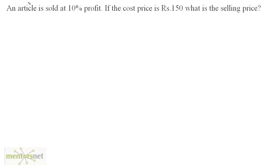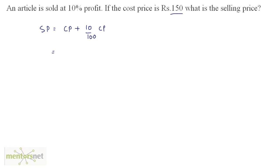Here is another question: an article is sold at 10% profit. If the cost price is Rs 150, what is the selling price? Recall that profit is always calculated upon the cost price, so 10% profit is calculated on the cost price. The selling price equals the cost price plus 10% of the cost price, which is 150 plus 10% of 150. That is 150 plus 15, so the selling price is 165 rupees.